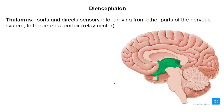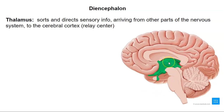The thalamus sorts and directs sensory information arriving from other parts of the nervous system to the cerebral cortex, so it functions as a relay center. All sensory information — other than your sense of smell — is routed through the thalamus and then relayed to portions of the cerebrum.